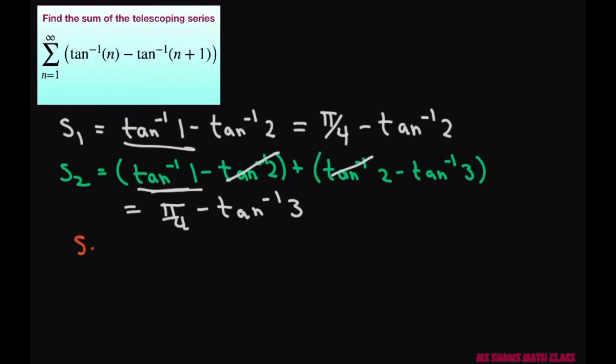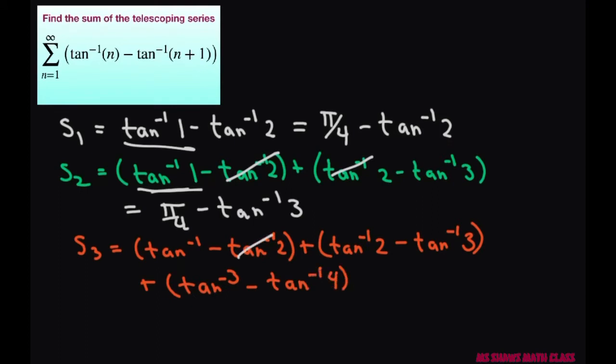Let's try one more and see if we can see better what's going on. So we're going to have inverse tan of 1 minus inverse tan of 2 plus inverse tan of 2 minus inverse tan of 3 plus inverse tan of 3 minus inverse tan of 4. Again, everything is like a telescope. And inverse tan of 1 is going to be pi divided by 4 minus inverse tan of 4.